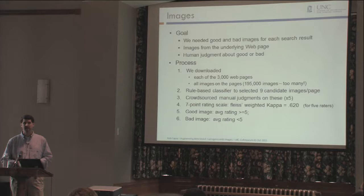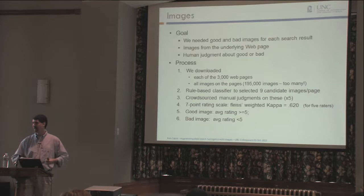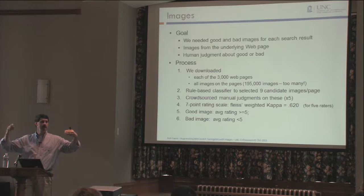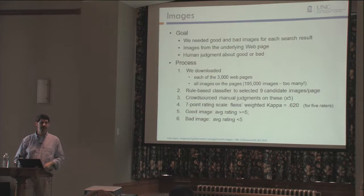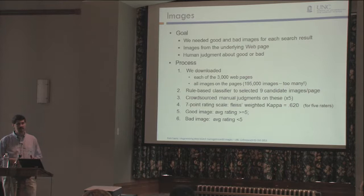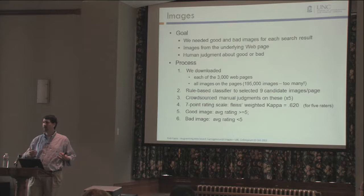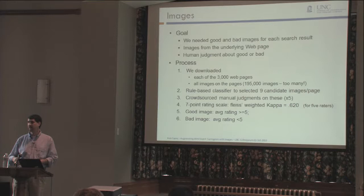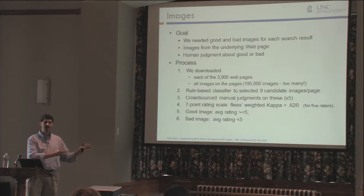We felt it was important to get human judgments on how well these images actually reflected the content of the page. So we crowdsourced this on Amazon Mechanical Turk, showing workers a screenshot of the underlying page and nine extracted images, asking them to rate each image on a scale of one to seven for how well it reflected the page content. We had five people do each rating. We computed kappa statistics for agreement — they were 0.6, which across five raters is not so bad. We set a threshold: rating over five was a good image, under five was a bad image.